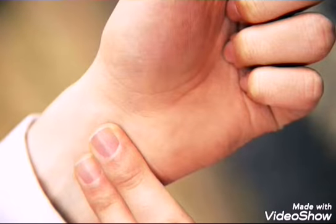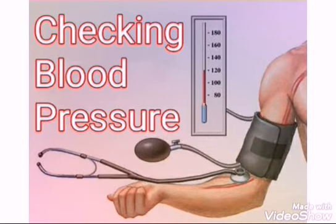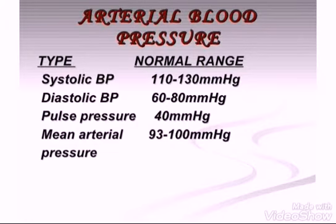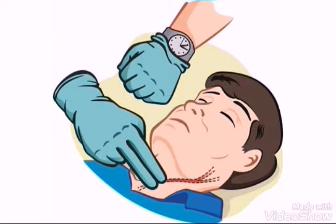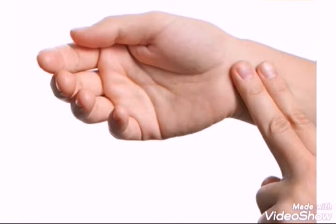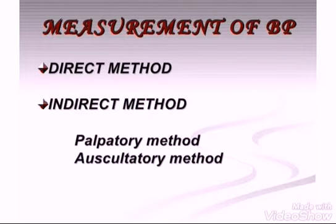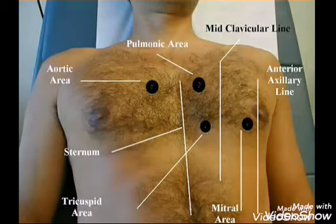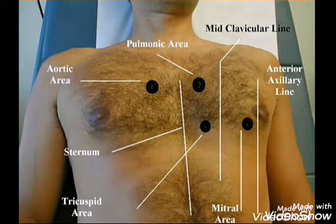Blood pressure is the pressure of the blood within the arteries. It is produced primarily by the contraction of the heart muscle. Its measurement is recorded by two numbers. The first, systolic pressure, is measured after the heart contracts at its highest increased pressure.